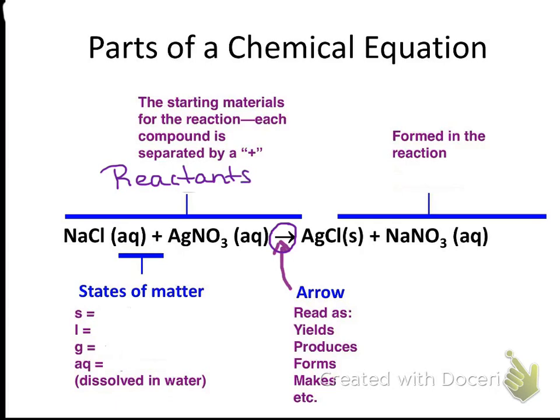So anything on the left side of the arrow is a reactant, and each individual element or compound is divided by a plus sign. So that means that NaCl is one thing, AgNO3 is another thing. Those two things are going to combine. The arrow can read as yields, produces, forms, or makes.